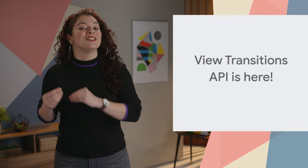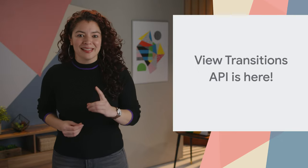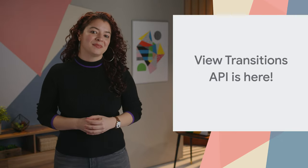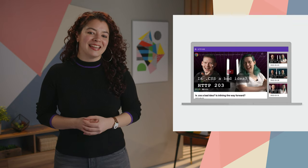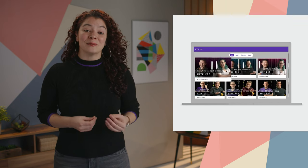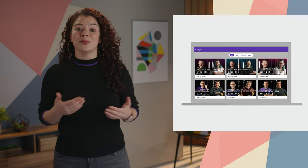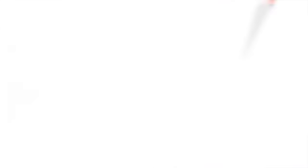Creating smooth transitions on the web is complicated, to say the least. The View Transitions API is here to make creating polished transitions simpler by snapshotting views and allowing the DOM to change without any overlap between states. The default View Transition is a crossfade.